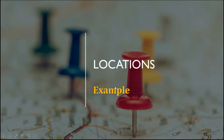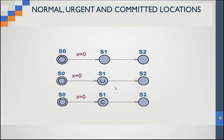Let's look at another example — the location example from last time. We'll return to this example in the queries since we want to verify the time on some locations. In this example we have three types of locations: a normal one, an urgent one, and a committed one. We want to check the time on the urgent location, because for an urgent location the time is frozen.